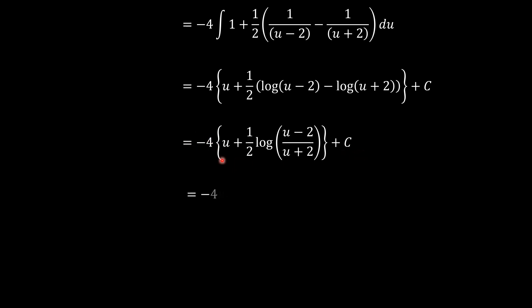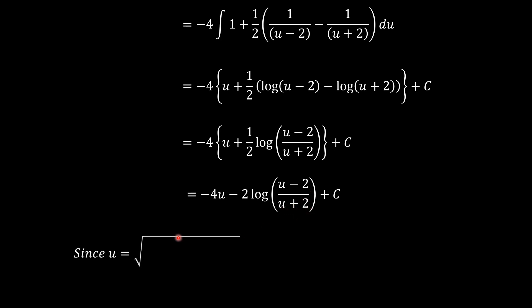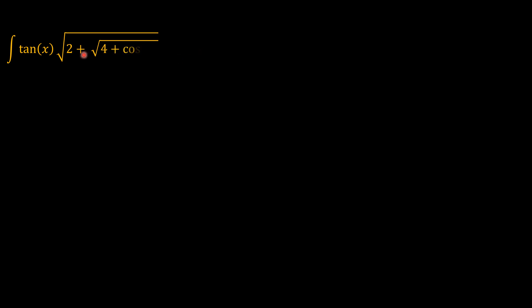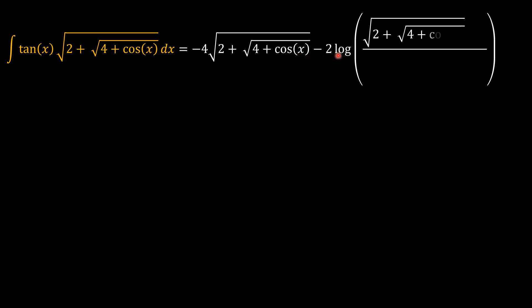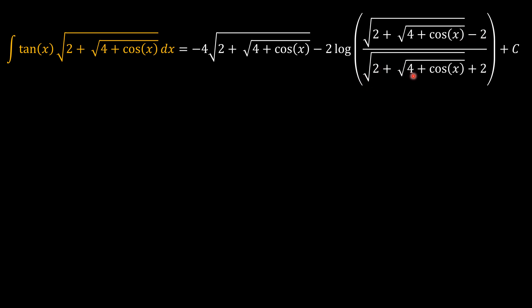There is a factor of negative 4 outside, which we distribute to get negative 4u minus 2 times log of (u minus 2) over (u plus 2). Since u equals the square root of 2 plus the square root of 4 plus cosine x, substituting back gives the final answer: the integral of tan x times sqrt(2 + sqrt(4 + cos x)) equals negative 4 times sqrt(2 + sqrt(4 + cos x)) minus 2 log of (sqrt(2 + sqrt(4 + cos x)) minus 2) over (sqrt(2 + sqrt(4 + cos x)) plus 2), plus the integration constant. This is the expected answer.